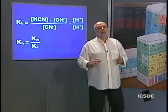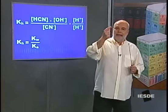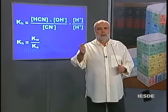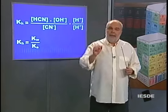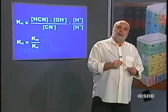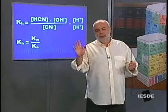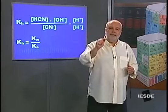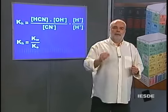Eu vou te ensinar um truque: sempre vai ser Kw sobre K de quem for fraco. Nesse caso, nós tínhamos um ácido fraco, que era o HCN. Ou seja, Kw sobre o Ka desse ácido fraco. Sempre vai ser sobre o K de quem for fraco.